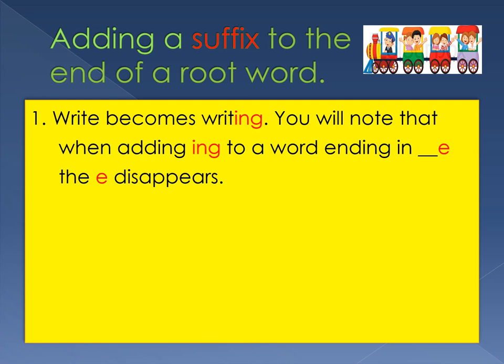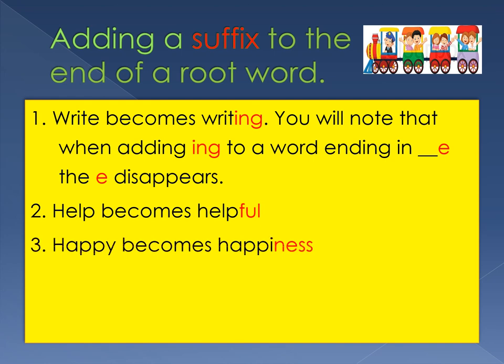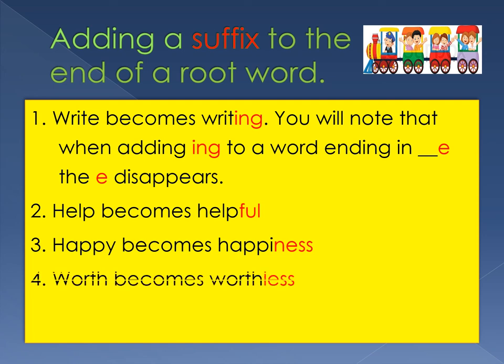You will note that when adding 'ing' to a word ending in 'e', the 'e' disappears. 'Help' is a root word. When we add the suffix 'ful' to 'help' it becomes 'helpful'. The root word is 'happy'. When you add 'ness' to 'happy', the 'y' changes to an 'i' and the word becomes 'happiness'.